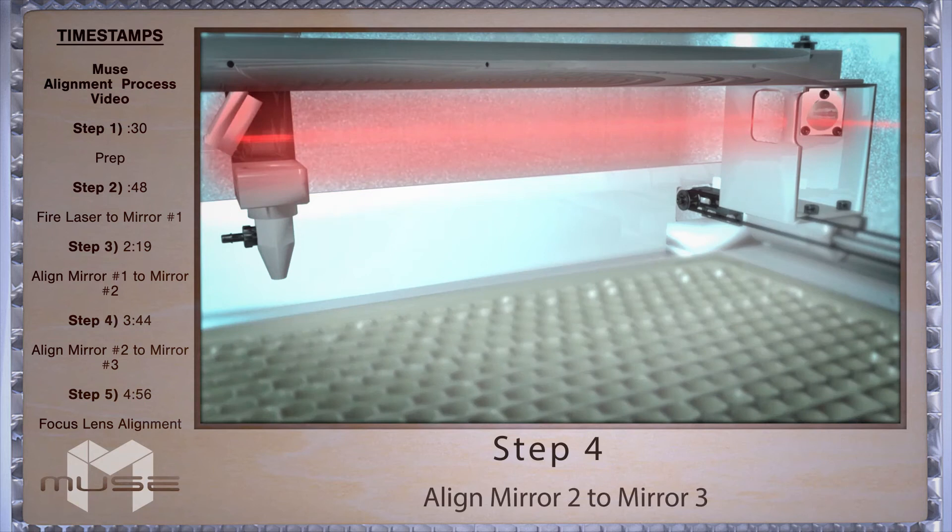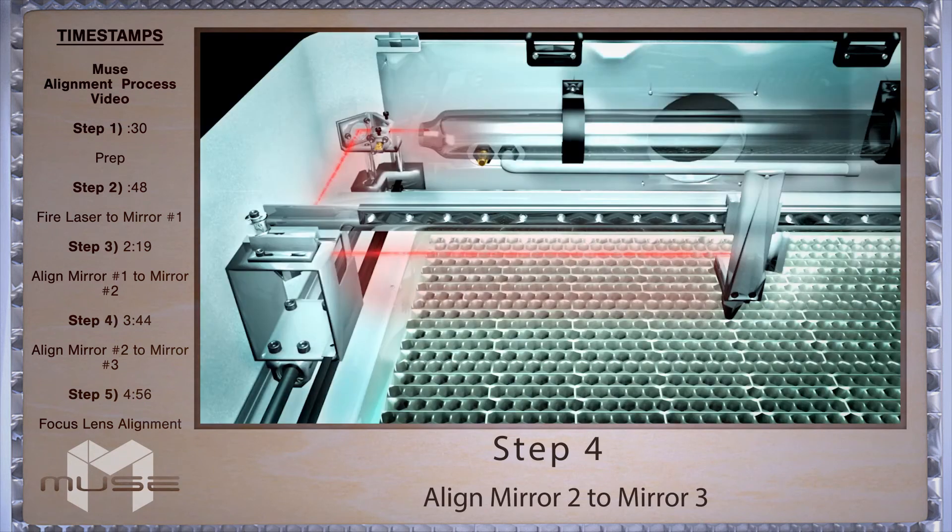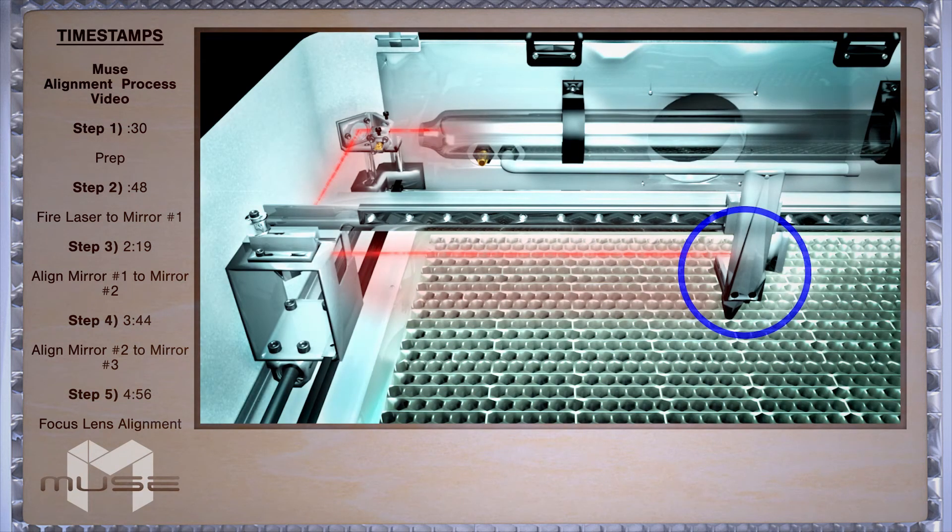The third mirror is on the laser head itself and moves along the X gantry. Place a piece of thermal paper on top of mirror three.